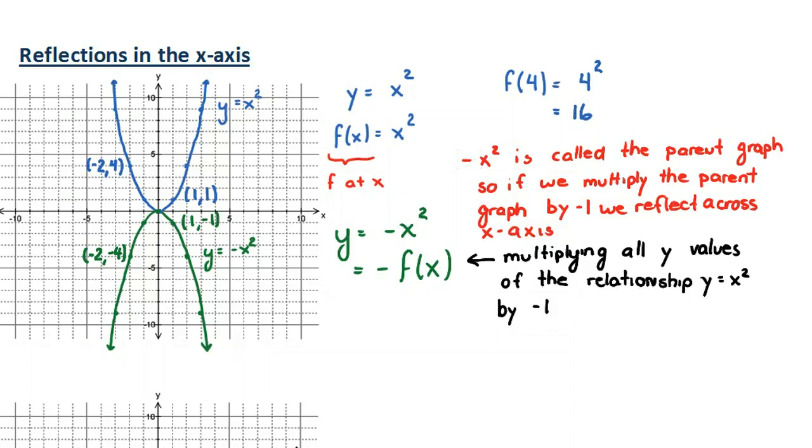And again, for the study of quadratic relationships, this isn't as big of an idea to understand this reflection idea. But you're going to go on to study other relationships where we talk about reflections all the time. And that's when students usually make the connection that negative x squared is applying what's called a reflection in the x-axis to x squared.